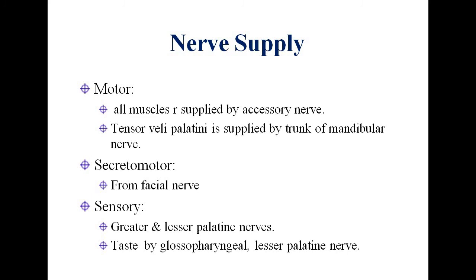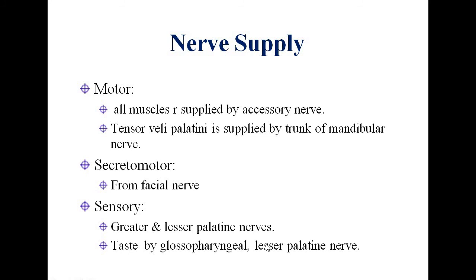Nerve supply — motor: all muscles of the soft palate are supplied by the accessory nerve via the vagus, except tensor veli palatini which is supplied by the mandibular nerve. Secretomotor fibers for the glands are derived from the facial nerve. Sensory supply is from the greater and lesser palatine nerves. Special sense — taste sensation is by the glossopharyngeal nerve and the lesser palatine nerve.